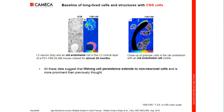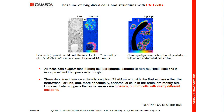All these data suggest that lifelong cell persistence extends to non-neuronal cells and is more prominent than previously thought. Data from these exceptionally long-lived SILAM mice provide the first evidence that the neurovascular unit, and more specifically endothelial cells in the brain, are mostly old. However, it also suggests that some vessels are mosaics built of cells with vastly different lifespans. MIMS-EM combination is a powerful tool to study cellular lifespan.